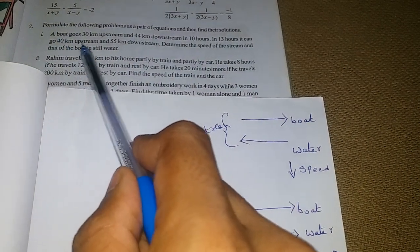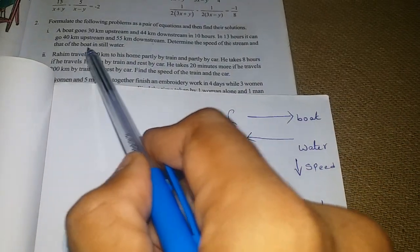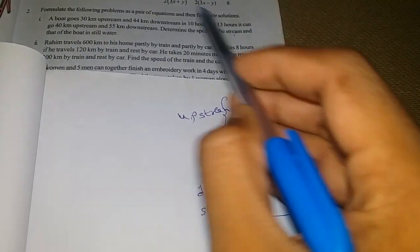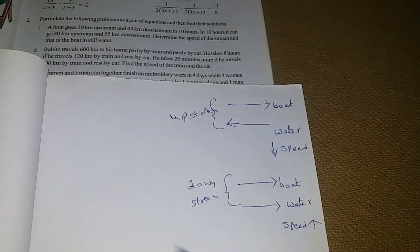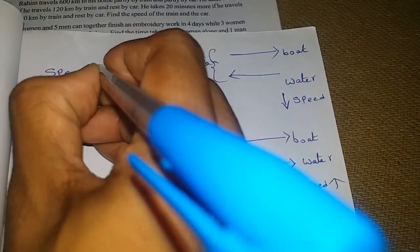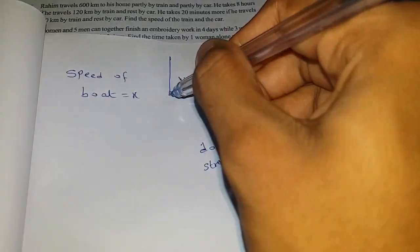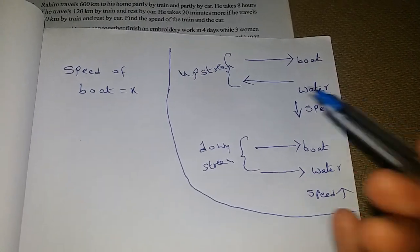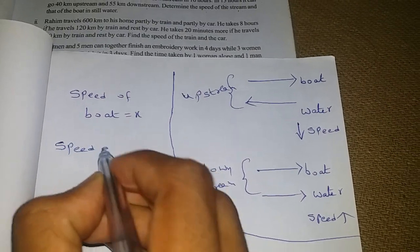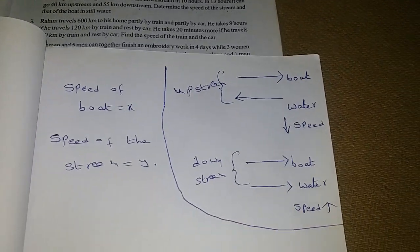In 13 hours, it can go 40 kilometers upstream and 55 kilometers downstream. Then determine the speed of the stream and that of the boat in still water. We need to find the speed of the stream and speed of the boat. Since we don't know anything, we take speed of the boat as x and speed of the stream as y.